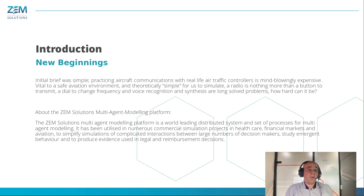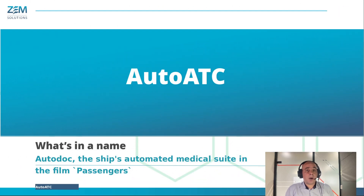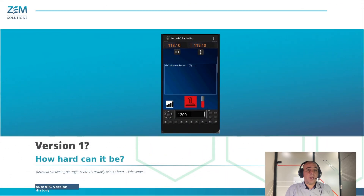So we came up with a name — AutoATC — inspired by Autodoc in the film Passengers, and began development. The first proof of concept came together quickly over the Christmas holidays of 2017. A basic phone application and a plug-in for the X-Plane Flight Simulator was shared publicly in July 2018.